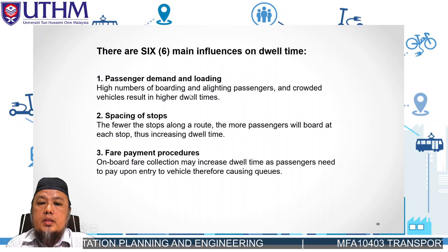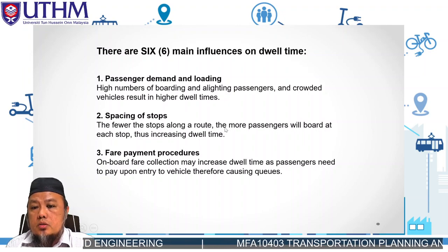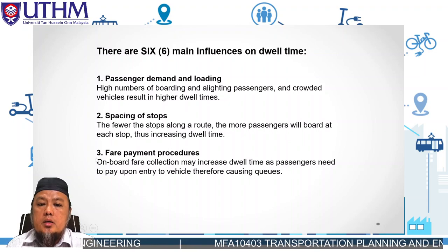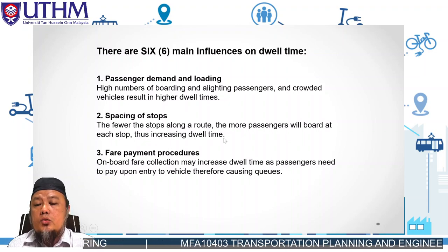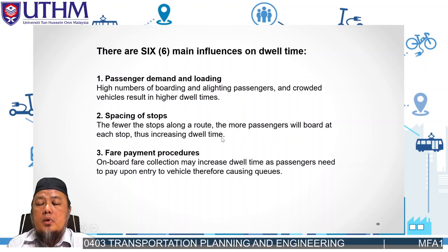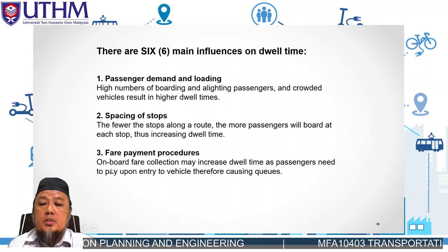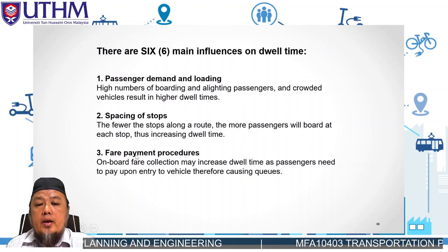The second factor is stop spacing. Fewer stops along a route means more passengers board at each stop, which increases dwell time. If you provide more stops along a route, you can create more dwell time because each boarding and alighting activity requires time.